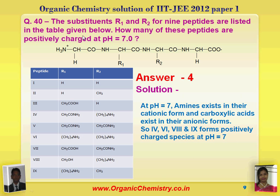Last question of paper first: the substituted R1 and R2 for nine peptides are listed in the table — how many of these peptides are positively charged at pH 7? If R1 and R2 are both H, the molecule will not be basic because the positive and negative parts neutralize. Similar is the case in second and third. But in case of fourth, when R1 is CH2(NH2) and R2 is CH2CH2CH2CH2NH2, due to the NH2 groups, positive charge exceeds — giving net positive charge. Cases observed in 4th, 6th, 8th, and 9th. Answer is 4.